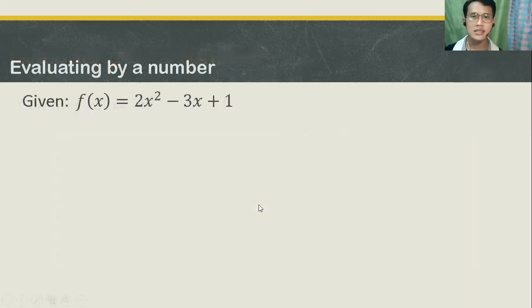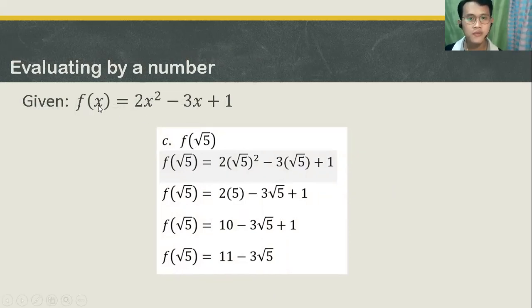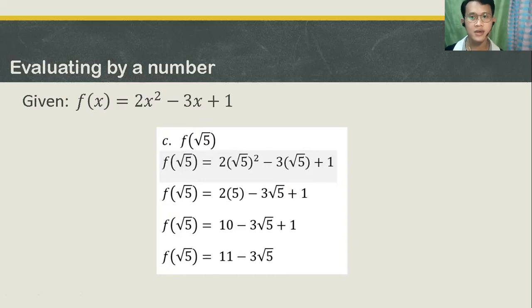Let's try to evaluate another given. For letter C, find f of square root of 5. The same process — you need to substitute the square root of 5 to your value of x. Your equation will turn into f of the quantity square root of 5, is equal to 2 times the quantity of square root of 5, squared, minus 3 times the quantity of square root of 5, plus 1. Then perform the operation.